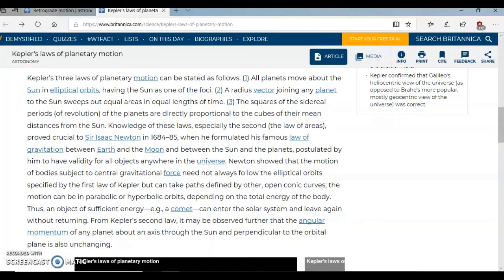Kepler's three laws of planetary motion can be stated as follows. One: All planets move about the Sun in elliptical orbits having the Sun as one of the foci. Two: A radius vector joining any other planet to the Sun sweeps out equal areas in equal length of time. Three: The squares of the sidereal periods of revolution or the planets are directly proportional to the cubes of their mean distances from the Sun.